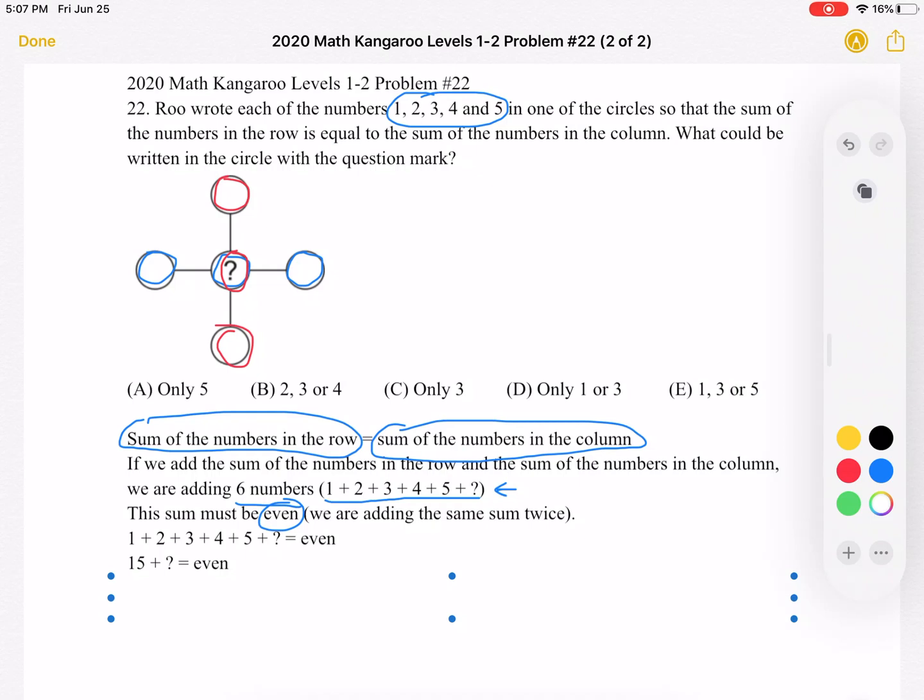Now what do we know? Well, 15 is an odd number, so that means that the question mark is an odd number. And out of our numbers over here, out of 1, 2, 3, 4, and 5, which ones are odd?